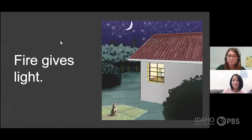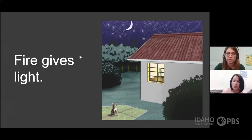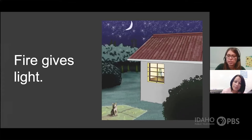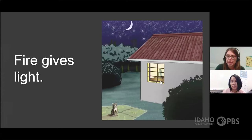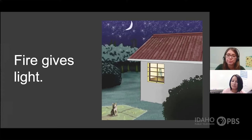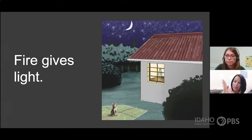Fire gives light. Where is the fire? I think in this window there is what we would call a lantern — this lantern looks to be maybe a gas lantern, or maybe there's a candle inside and it's on fire, giving light to the house. When we see it like that, that little piece of fire, we call that a flame.